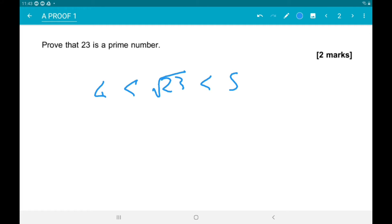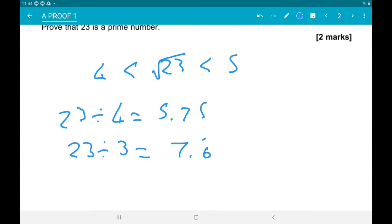So, 23 divided by 4 is 5.75. 23 divided by 3 is 7.6 or so. And 23 divided by 2 is 11.5.